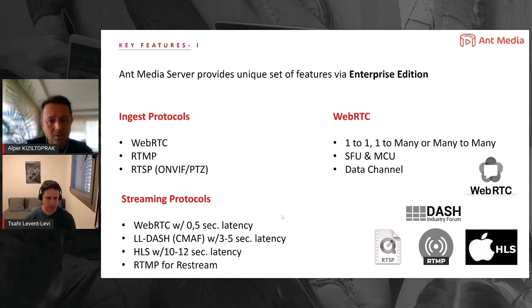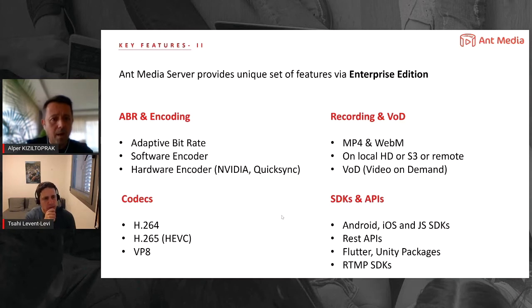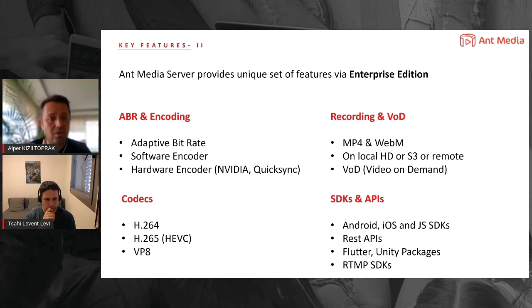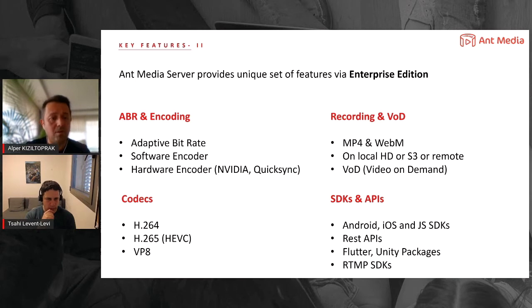Let's go to the second feature set: ABR and encoding — one of the important functions of AntMedia server. We execute on-the-fly adaptive bitrate mechanism, which allows end-users to see the video without any quality degradation. You can use SD, HD, or lower or higher resolutions to deliver the video to end-users. AntMedia server comes with a software encoder which performs the encoding functionality and also does the adaptive bitrate. Some of our clients use a hardware encoder, which supports NVIDIA and CUDA as well, and can be easily enabled by installing it.